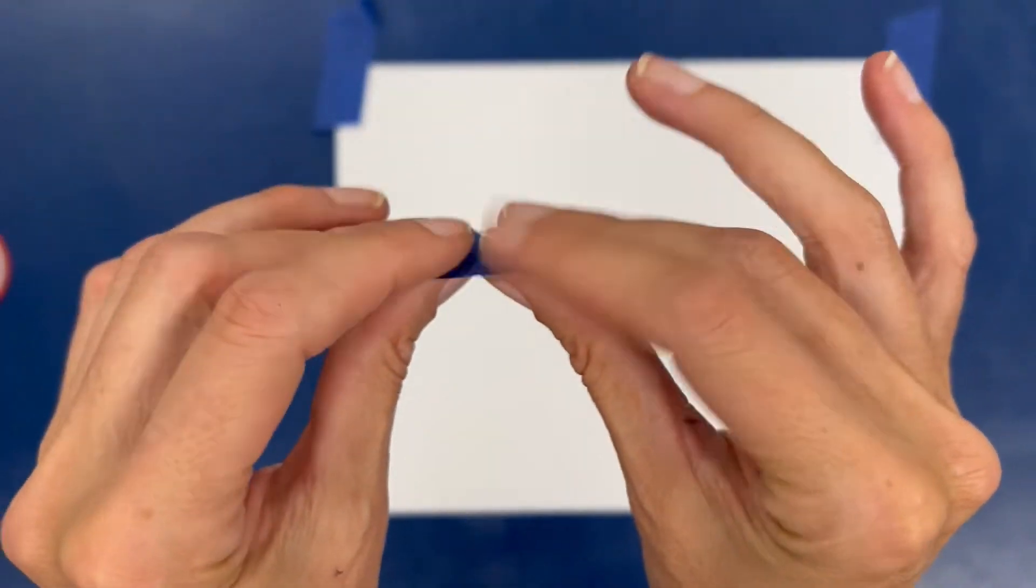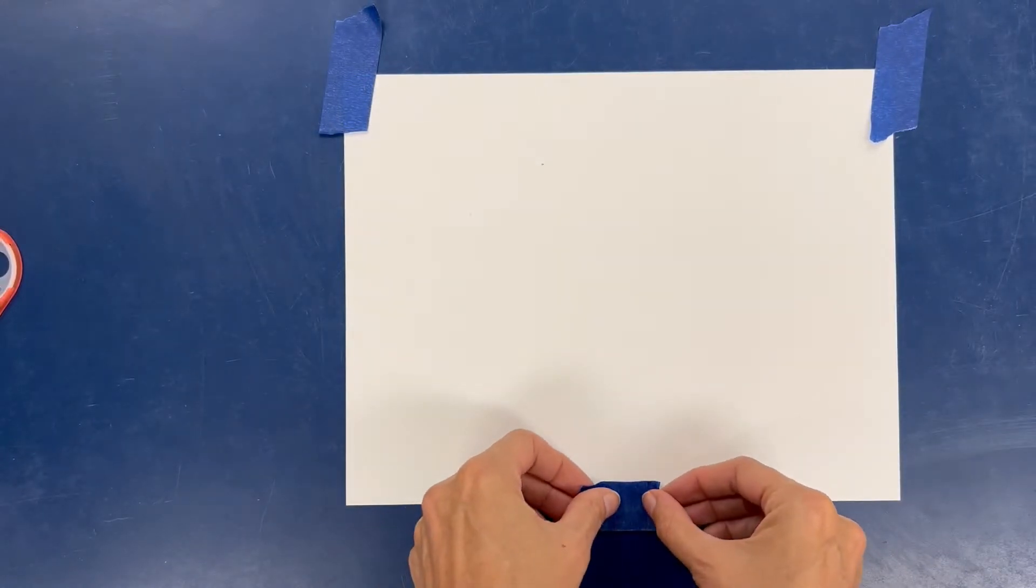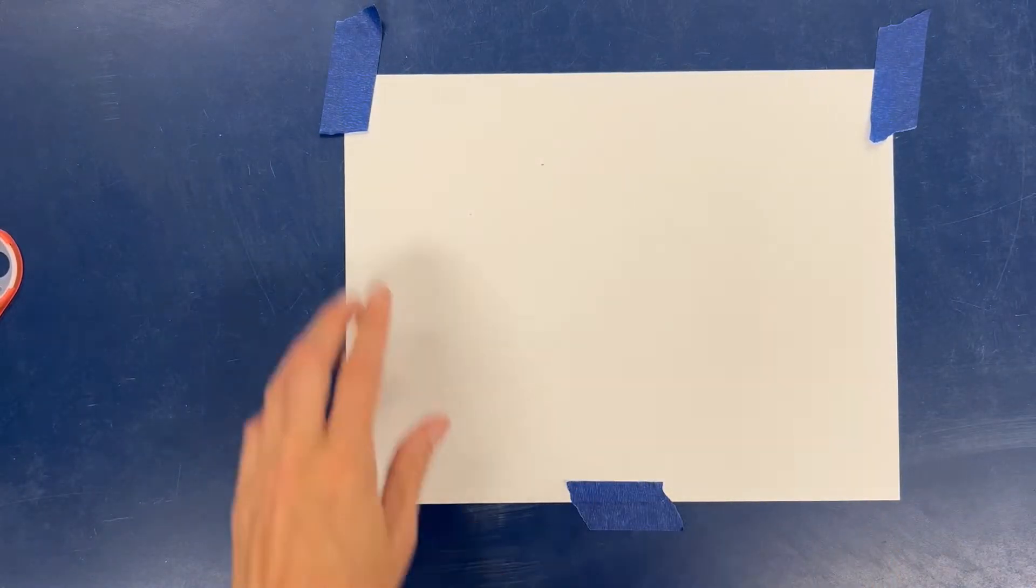Whenever I put tape down on corners I like to put a little bit of my finger on there so it's not super sticky so when I peel it off it won't have any ripped paper. So that's a little trick.